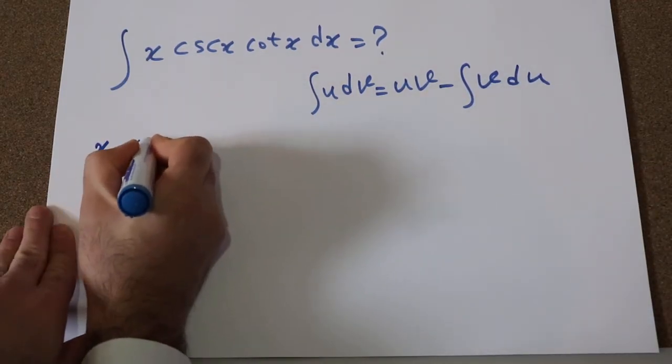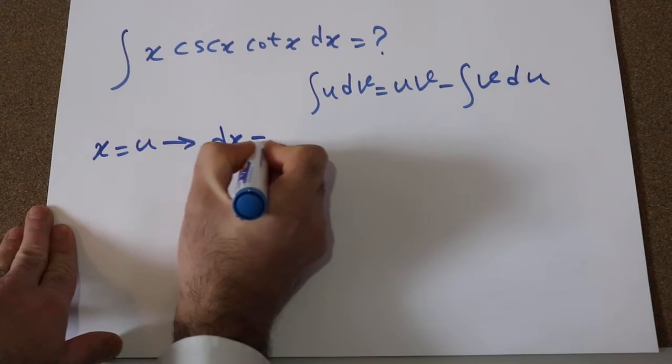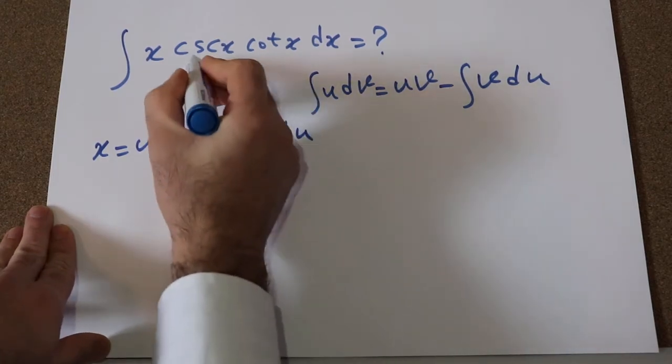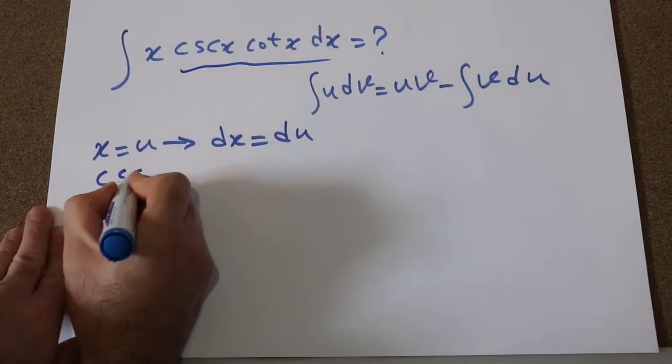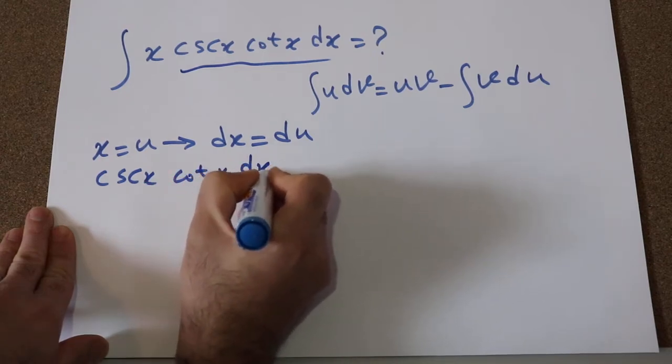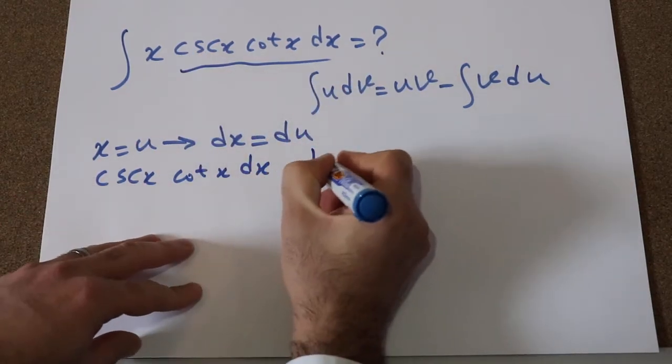Let's define x as u, therefore dx will be equal to du. And let's define cosecant x cotangent x dx, that is this part of the integral, as dv.